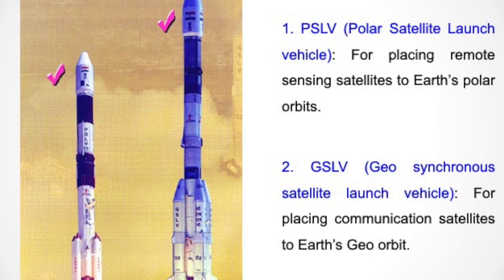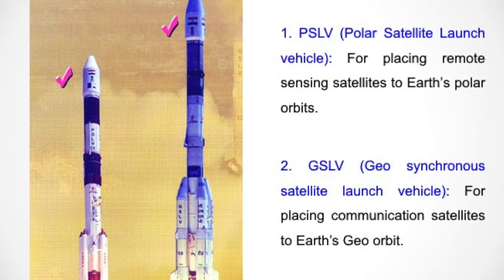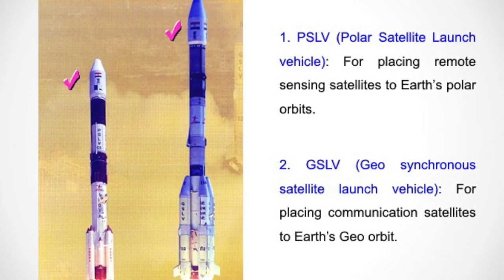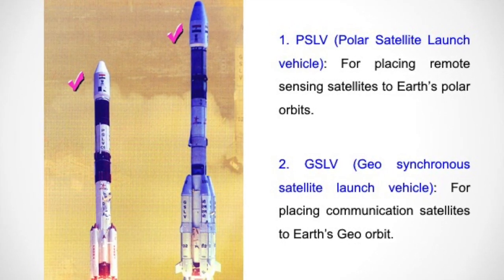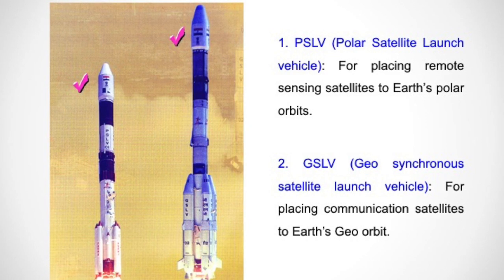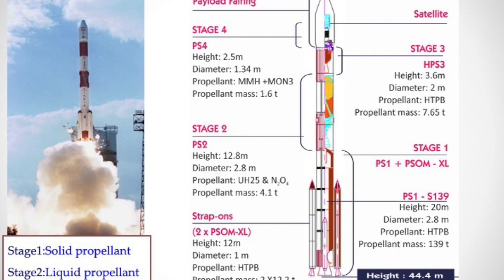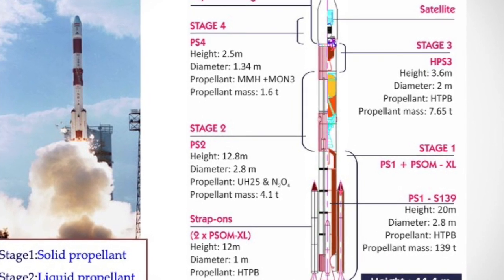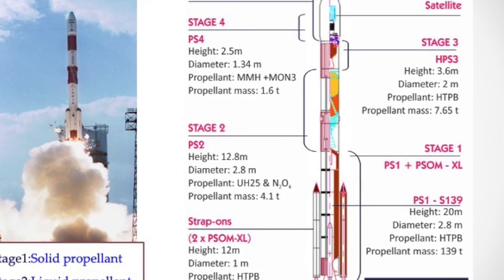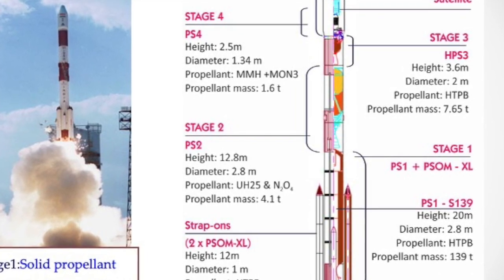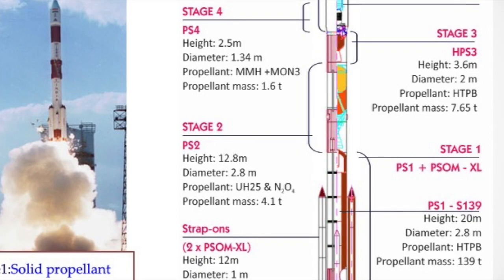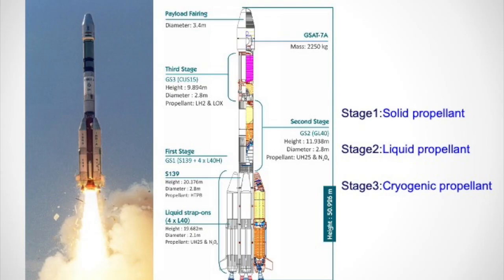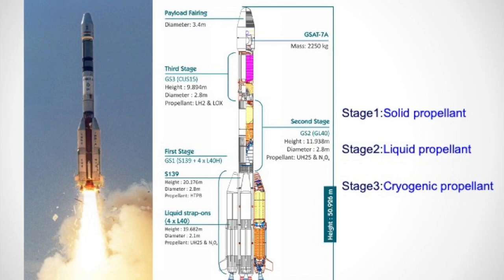Next, we can study the position of different propellants in different rockets. ISRO commonly uses two types of rockets — PSLV and GSLV — for launching satellites into polar orbits and geo-orbits. The PSLV rocket has four stages: the first stage is solid propellant, the second stage is liquid propellant, the third stage is again solid propellant, and the fourth stage is liquid propellant. For GSLV rockets, which are larger than PSLV, the first stage is solid, the second stage is liquid, and the third stage is cryogenic propellant.